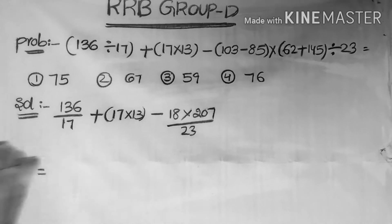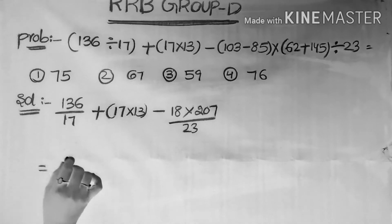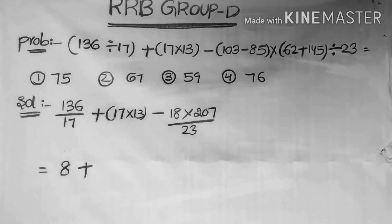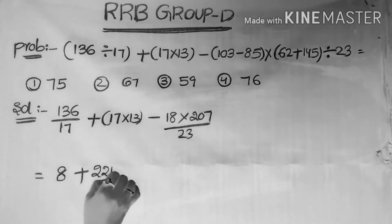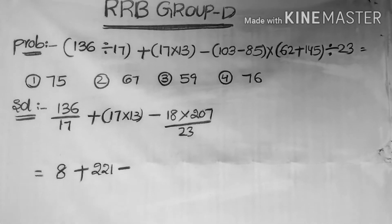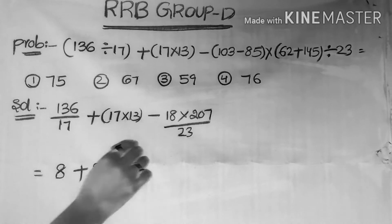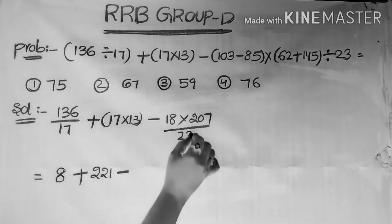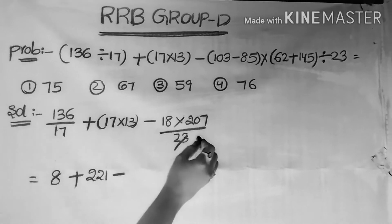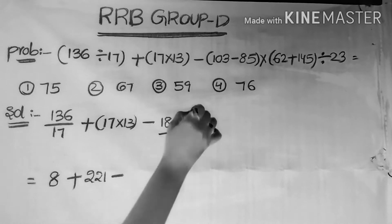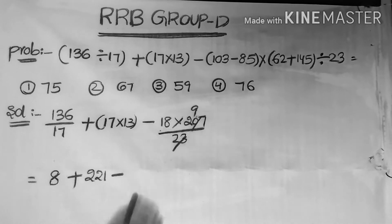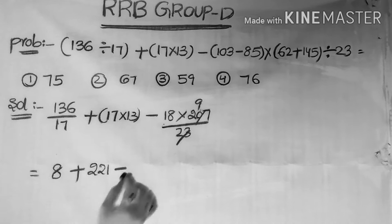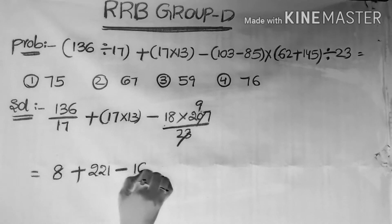Now this is equals to 136 by 17, which is 8, plus 17 into 21, minus. Now here we have 18 into 207 by 23. This 23 is cancelled 9 times. Now 18 into 9 is equals to 162.